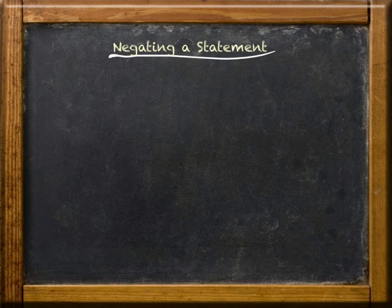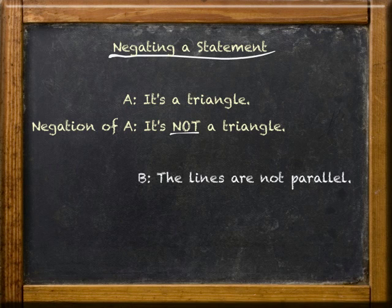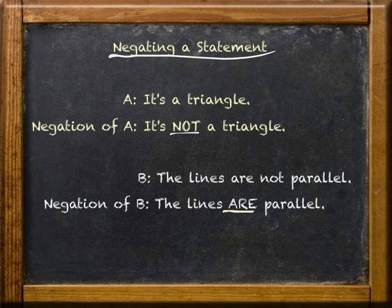Here's statement A: it's a triangle. And here's the negation of A. And likewise for statement B. That's all there is to it. To form the negation, you just state the opposite.